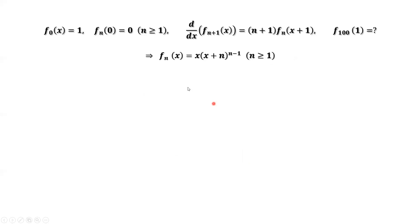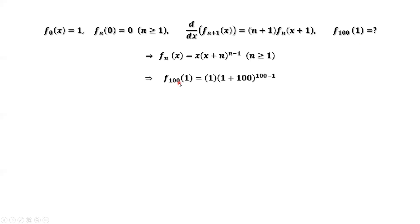Therefore, the general formula for this sequence of functions is fn of x equals x times (x+n) to the power (n minus 1), for n bigger than or equal to 1. Back to our question: when n equals 100 and x equals 1, we replace x by 1 and n by 100. Therefore, f100 of 1 equals 101 to the power 99. That's all. Thanks for watching and I'll see you next time.